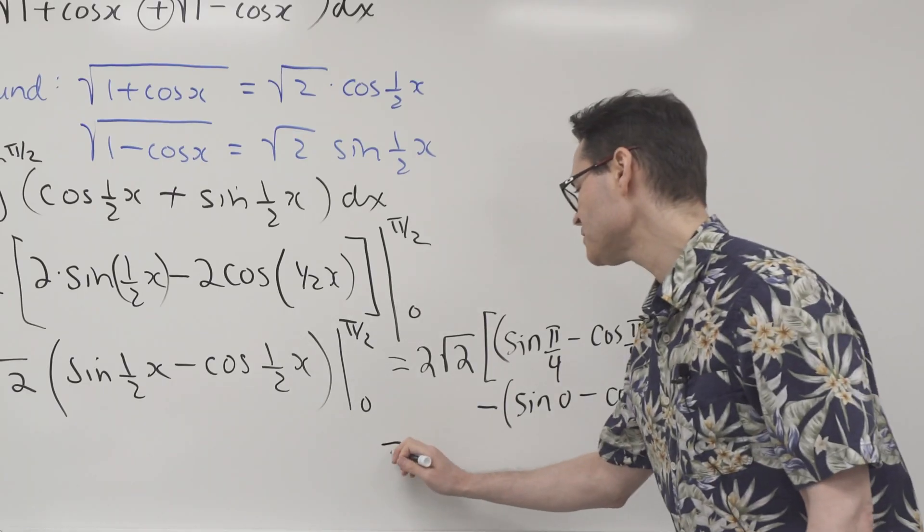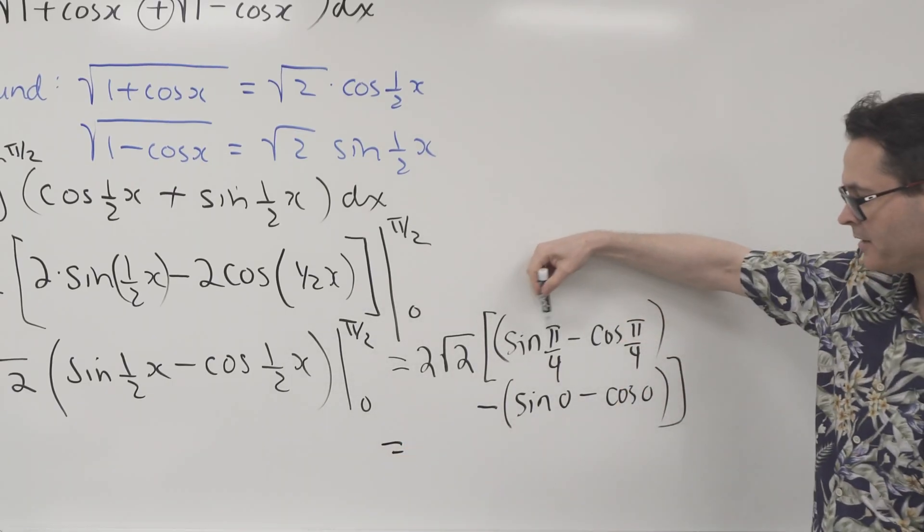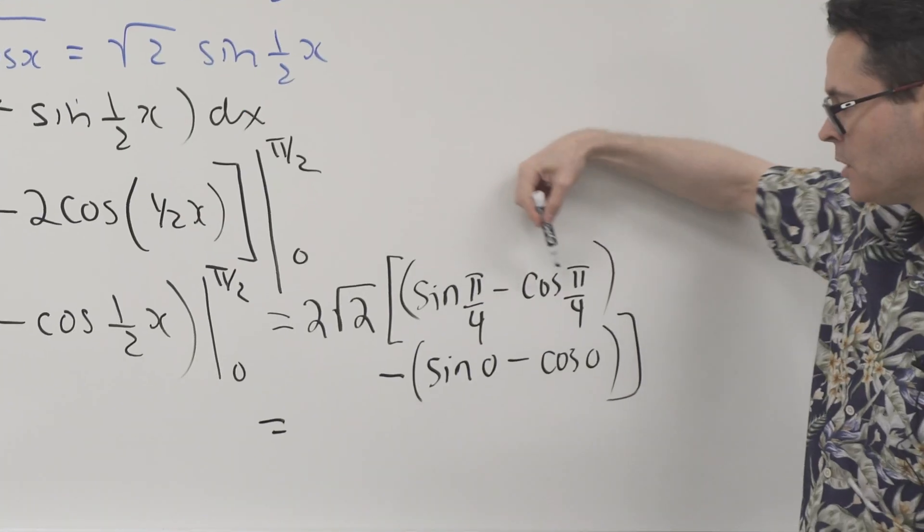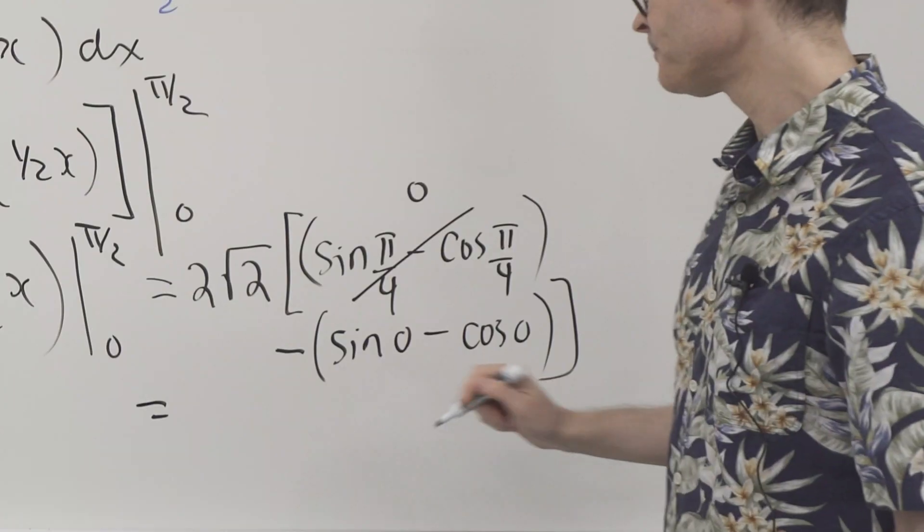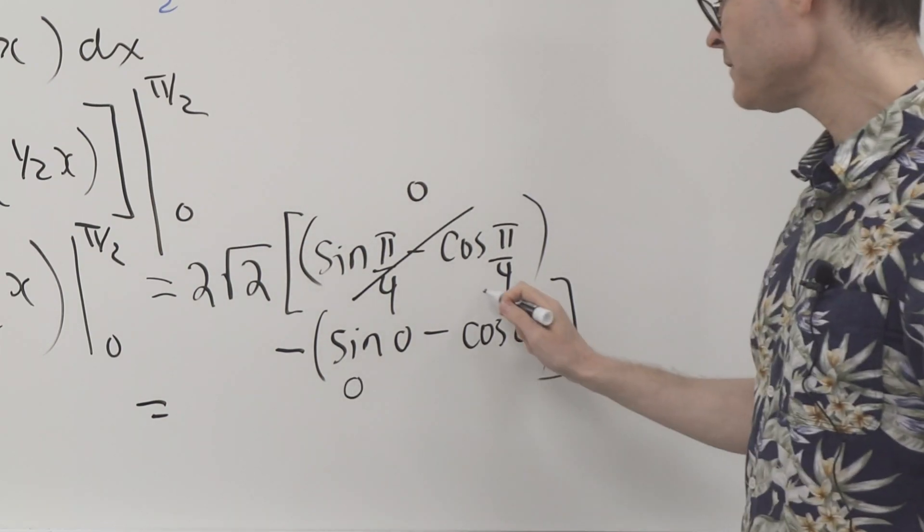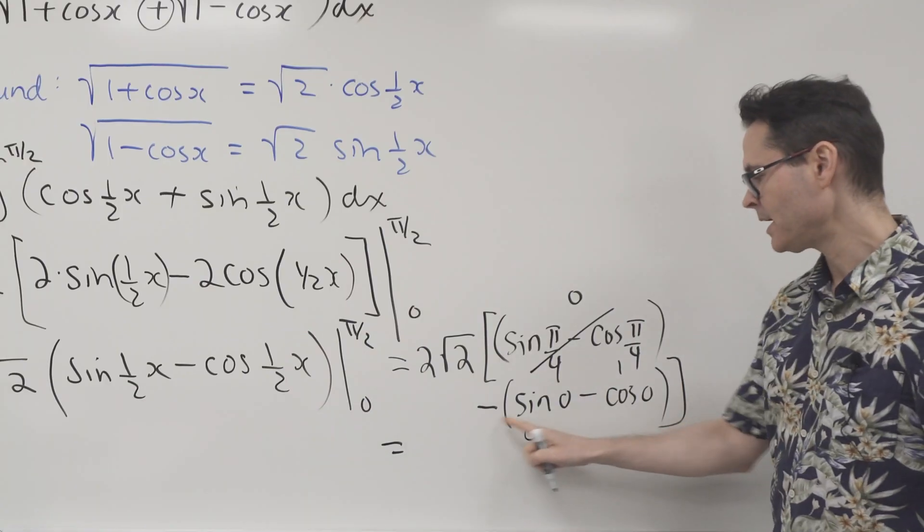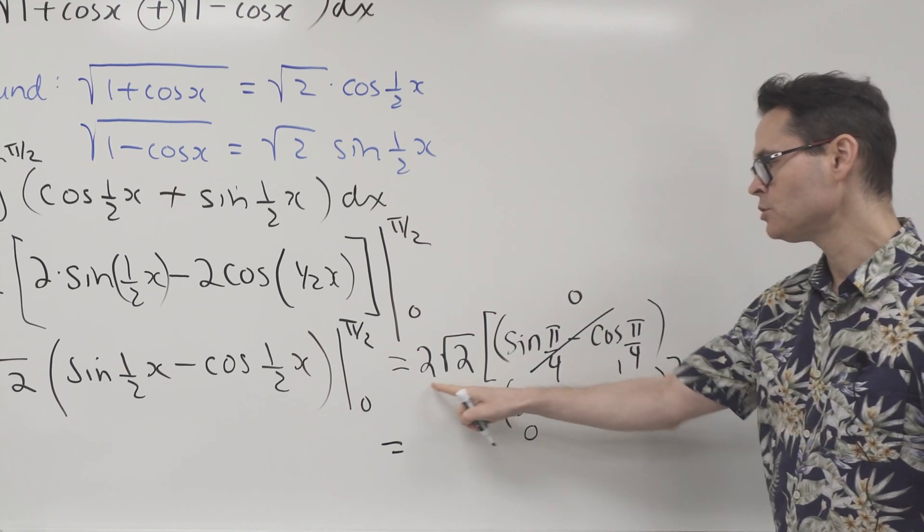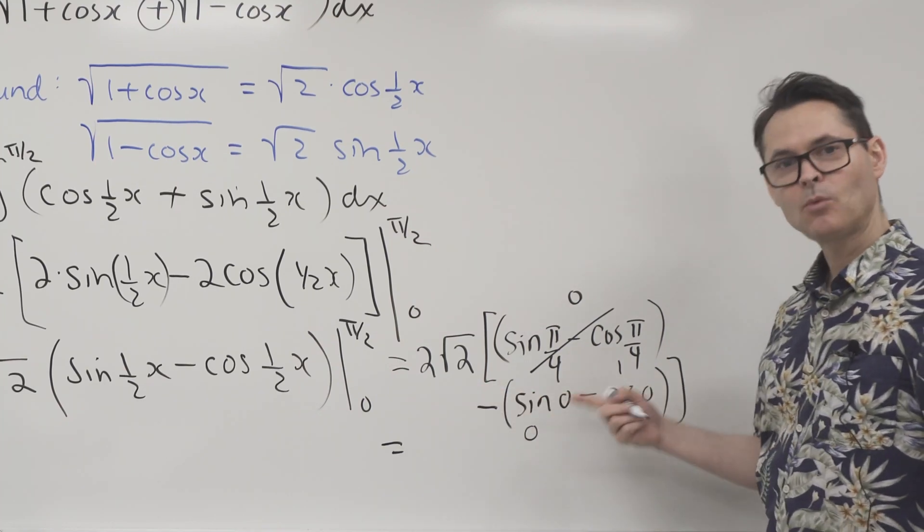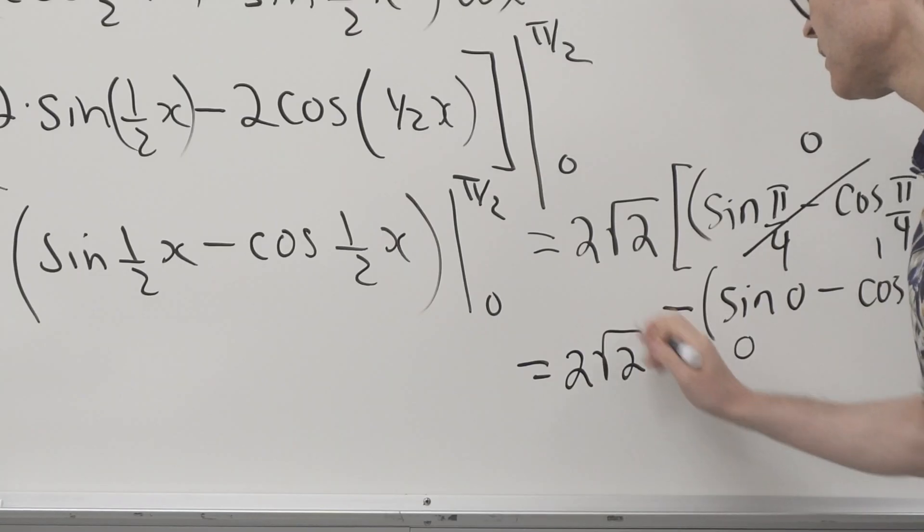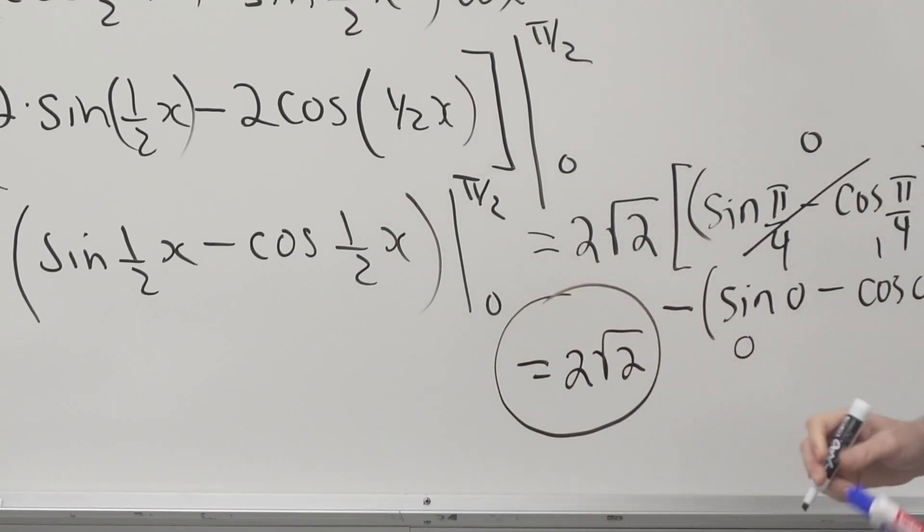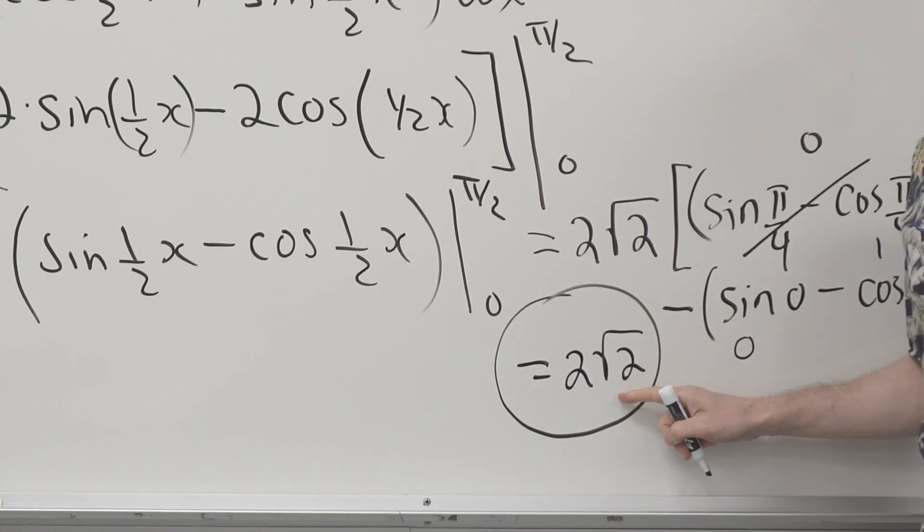And the final answer, well, that's going to be what? Sine of pi over 4 is root 2 over 2. Cosine of pi over 4 is root 2 over 2. So that just becomes 0. The sine of 0 is 0. And the cosine of 0 is 1. So that's a minus minus 1. So 2 root 2 times 1 is just 2 root 2. So the final answer, ladies and gentlemen, folks, is 2 root 2.